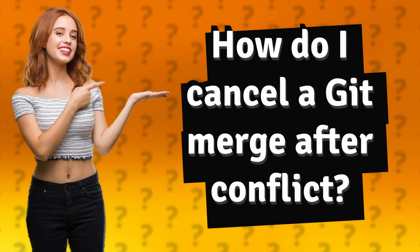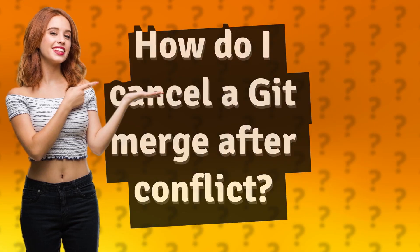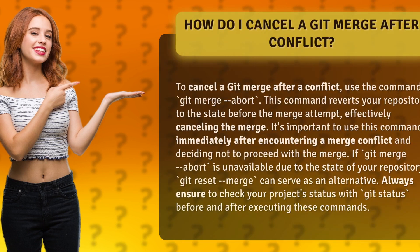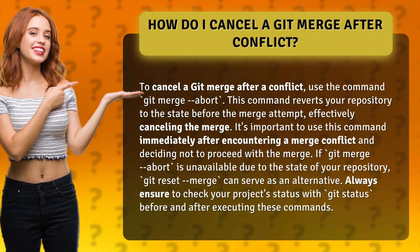How do I cancel a git merge after conflict? To cancel a git merge after a conflict, use the command git merge --abort. This command reverts your repository to the state before the merge attempt, effectively cancelling the merge.